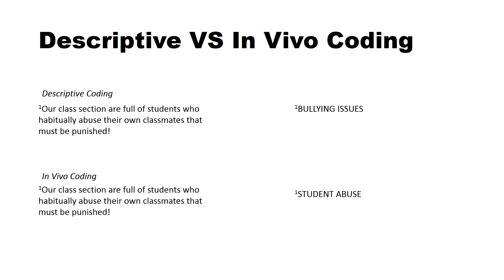Take time to see the difference — why is one descriptive coding and the other in vivo coding? In in vivo coding, if you notice, the word 'student' is from the statement, and the word 'abuse' is also in the statement. That is what in vivo coding is. The words we are using actually come from the statement of the participants. And descriptive coding describes what the statement is talking about — the researcher is the one to think about how to define that statement. That is the difference between descriptive and in vivo coding.